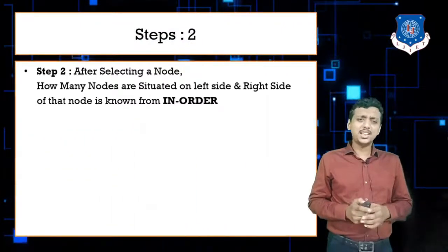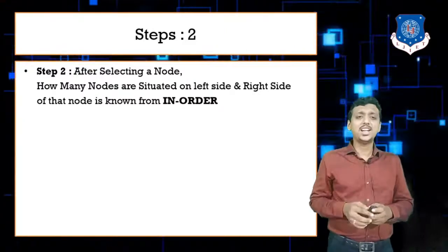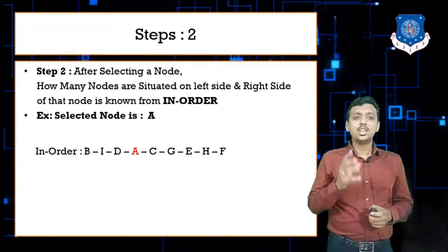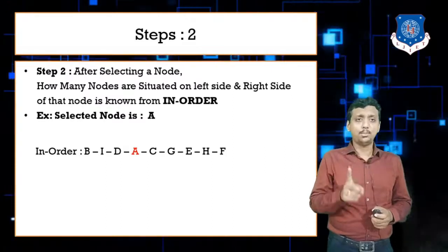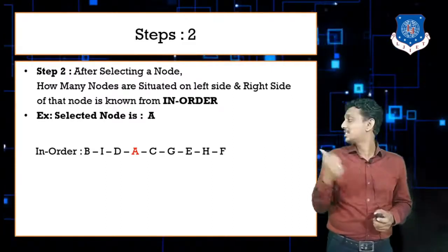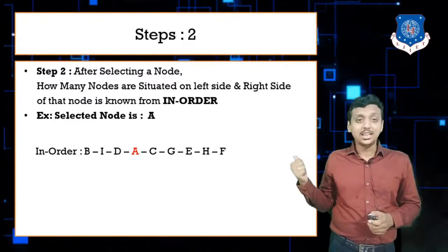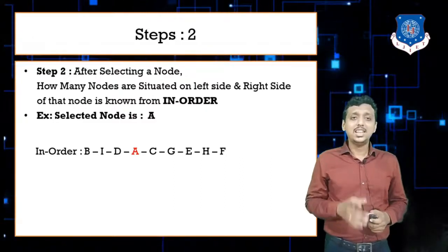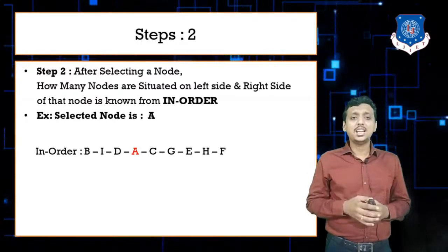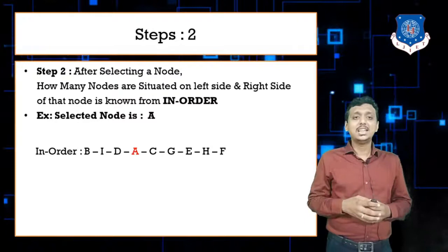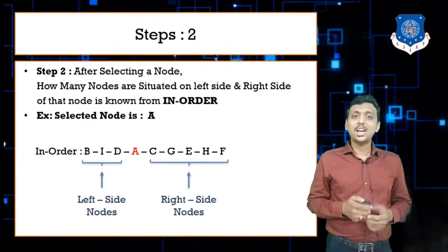Step two: after selecting node A, we look at the in-order sequence to find left and right side nodes. From the in-order, the nodes on the left side of A are B, I, and D. The nodes on the right side of A are C, G, E, H, and F. This tells us the left and right subtrees.